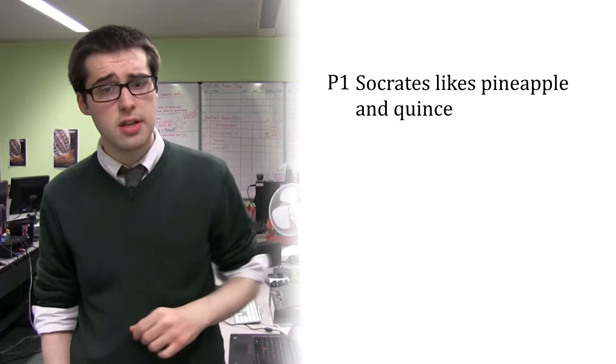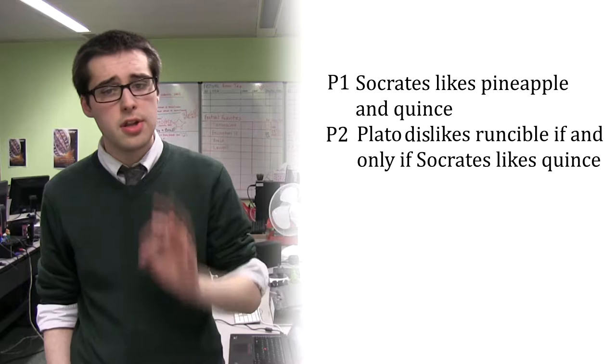Premise 1: Socrates likes pineapple and quince. Premise 2: Plato dislikes runcible if and only if Socrates likes quince. Conclusion: Plato dislikes runcible.